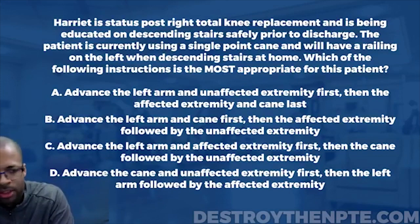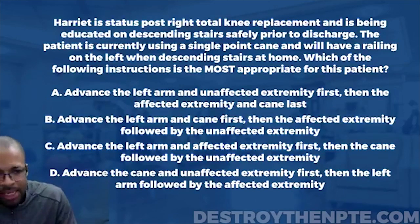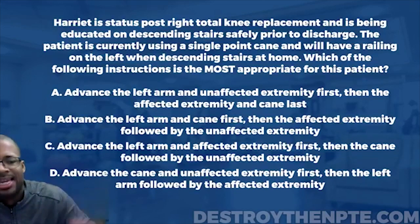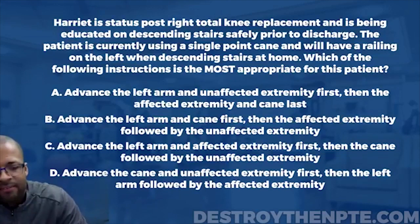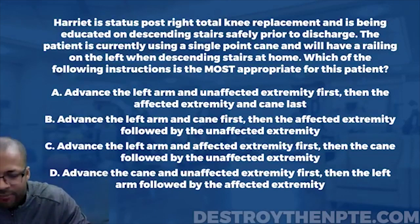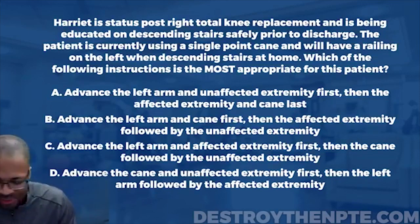Which of the following instructions is most appropriate for this patient? A: advance the left arm and unaffected extremity first, then the affected extremity and cane last. B: advance the left arm and cane first, then the affected extremity followed by the unaffected extremity. C: advance the left arm and the affected extremity first, then the cane followed by the unaffected extremity. D: advance the cane and the unaffected extremity first, then the left arm followed by the affected extremity.